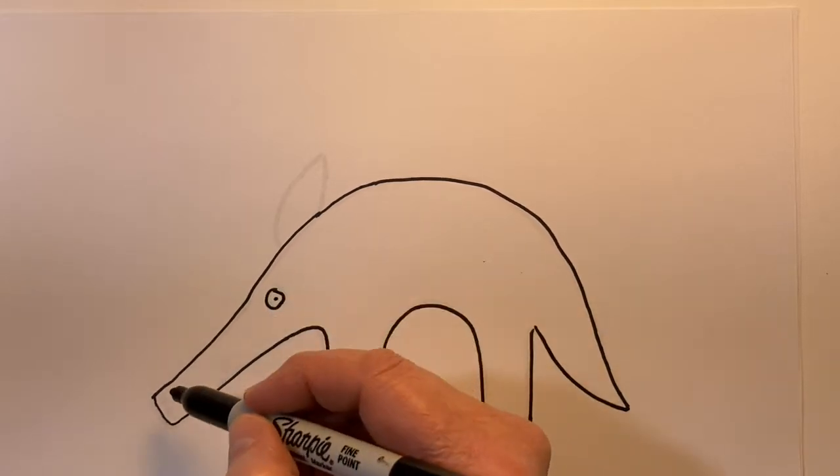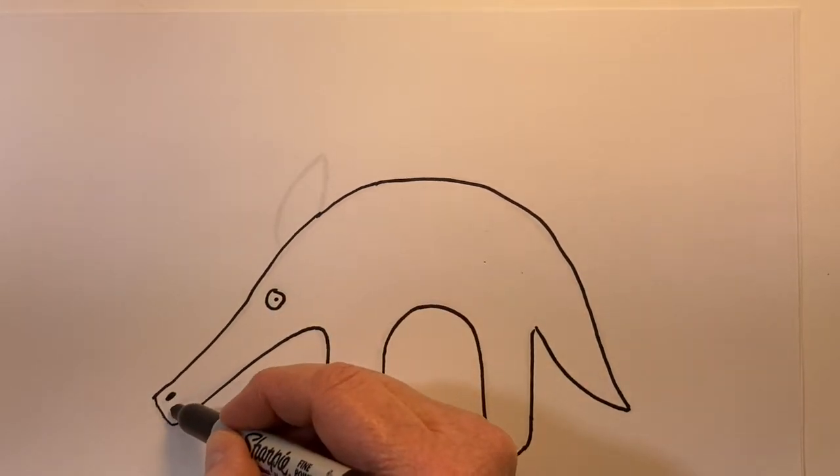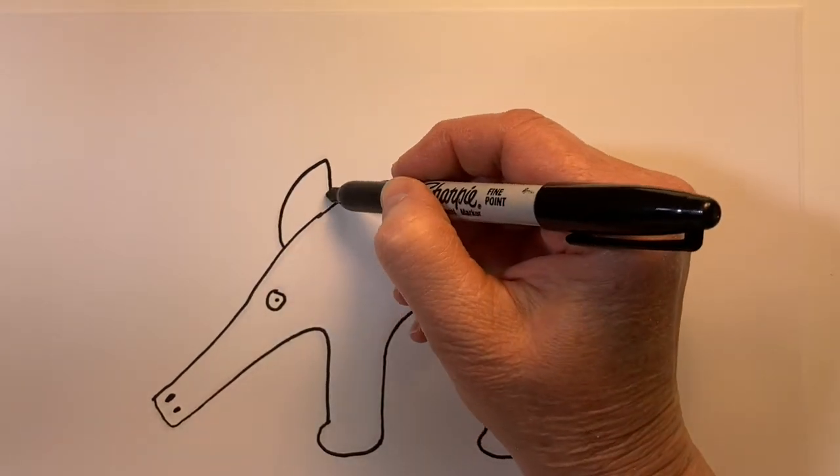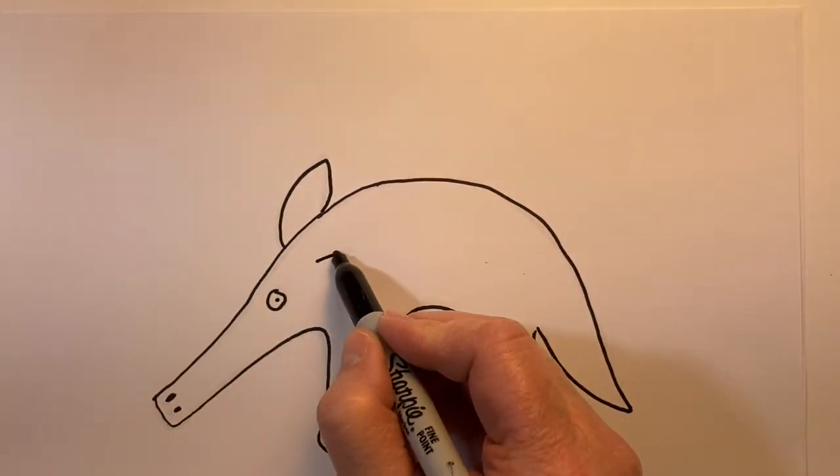Circle for the eye, and little nostrils there. And an ear. And we're going to create another ear.